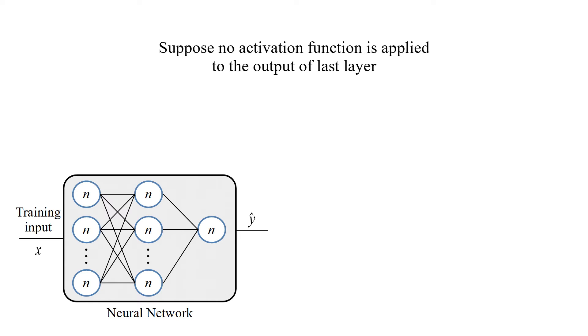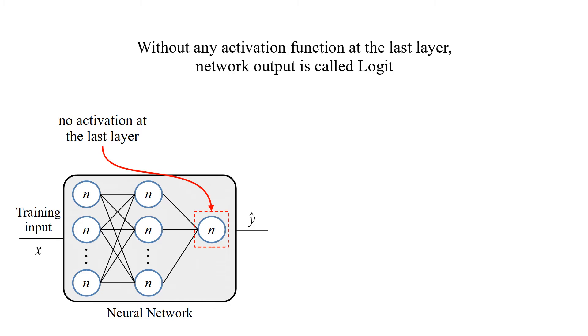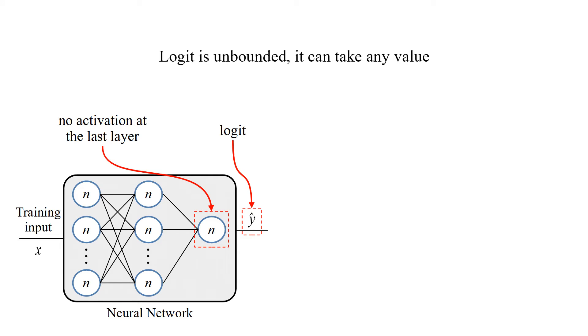Suppose no activation function is applied to the output of last layer. Without any activation function at the last layer, network output is called logit. Logit is unbounded, it can take any value.